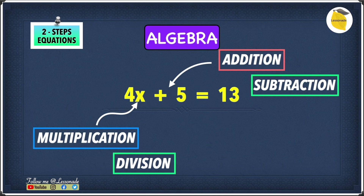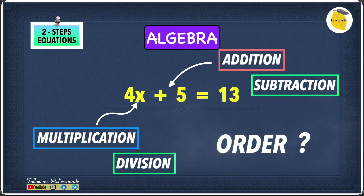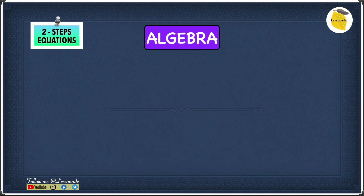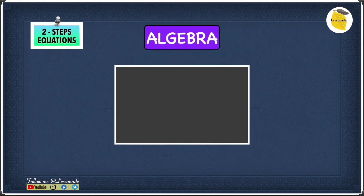The question is: in which order do we undo both of these? To know that, let's have a look at the order of operations. We're going to use a short form called GEMS.